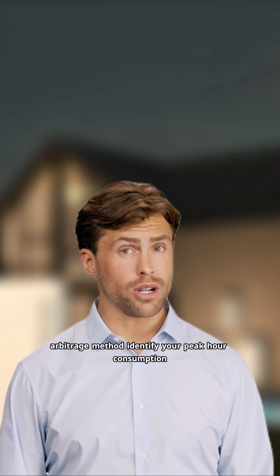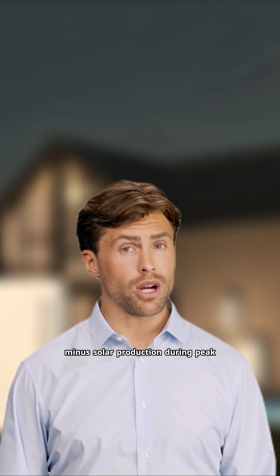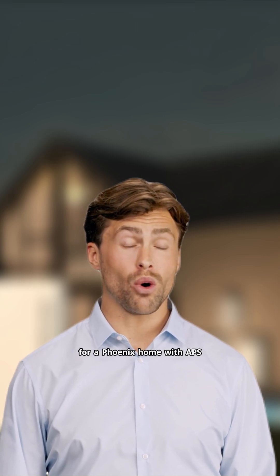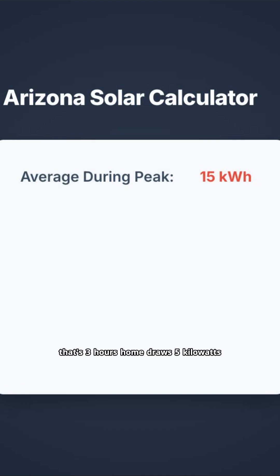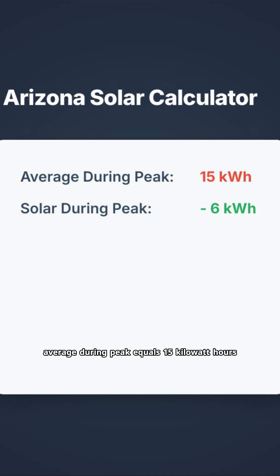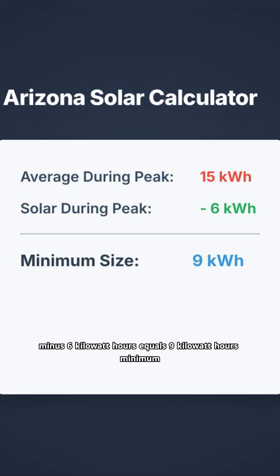Arizona or Nevada arbitrage method: identify your peak hour consumption minus solar production during peak. Example calculation for a Phoenix home with APS — peak hours 4-7 p.m. weekdays, that's 3 hours. Home draws 5 kWh average during peak equals 15 kWh. Solar produces 2 kWh during peak hours equals 6 kWh. Battery needed: 15 kWh minus 6 kWh equals 9 kWh minimum.